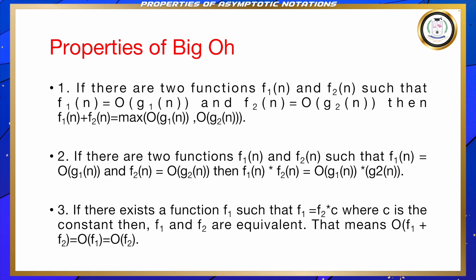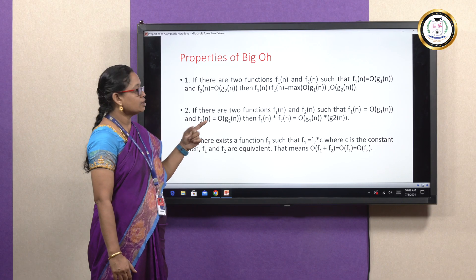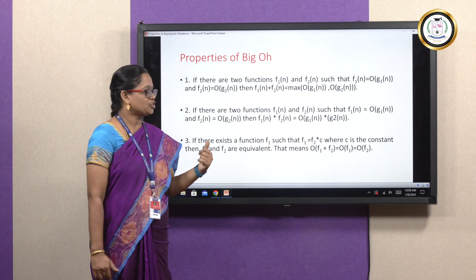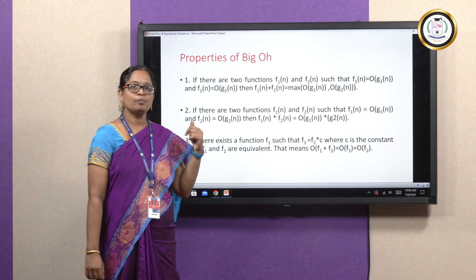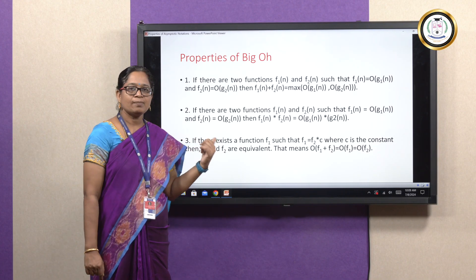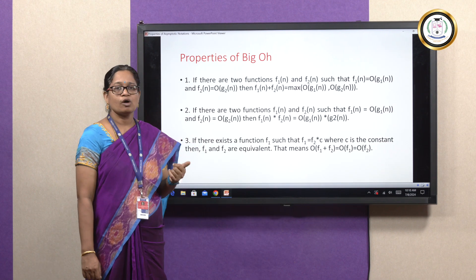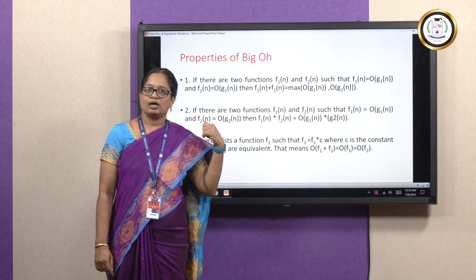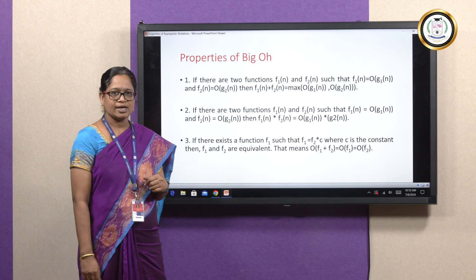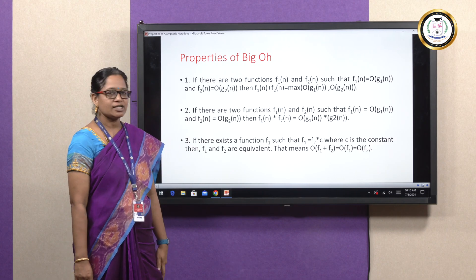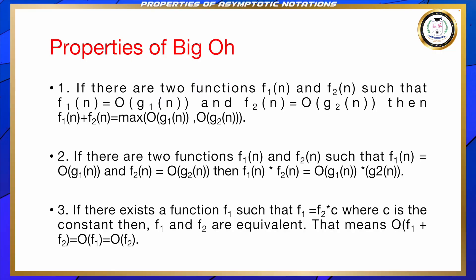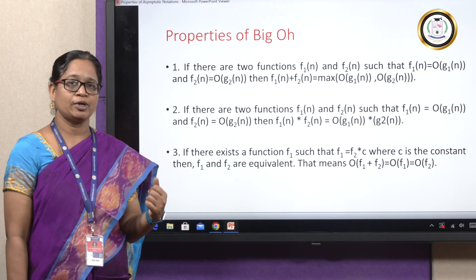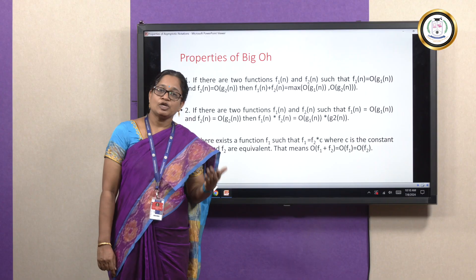Now we are going to learn the properties specific to big O notation. The first is the sum property: if f1 = O(g1) and f2 = O(g2), then f1 + f2 = O(max(g1, g2)). Next is the multiplicative property: if f1 = O(g1(n)) and f2 = O(g2(n)), then f1 × f2 = O(g1 × g2). When you multiply f1 and f2, that equals the multiplication of g1 and g2.